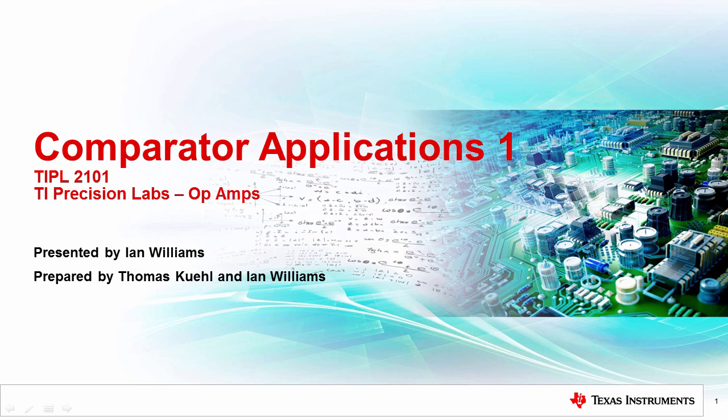Hello, and welcome to the TI Precision Labs video series discussing comparator applications. The comparator's job is to compare two analog input signals and produce a digital or logic level output based on that comparison. In this video, we'll discuss the basic functionality of the analog comparator and some of its key specifications, including input offset voltage, or VOS.